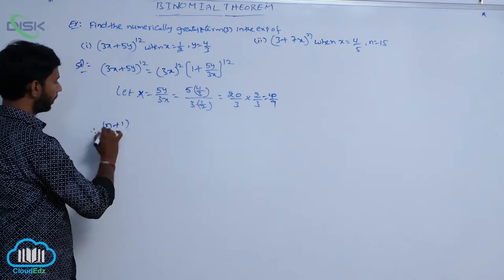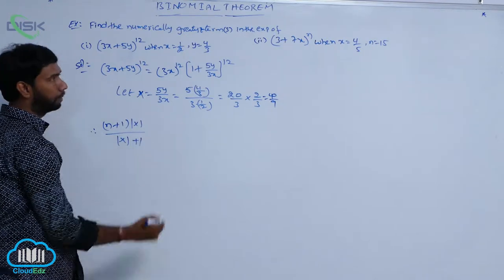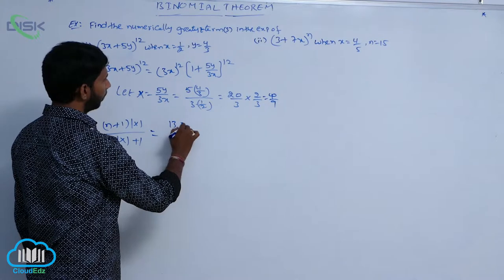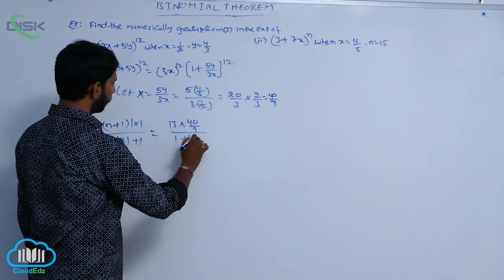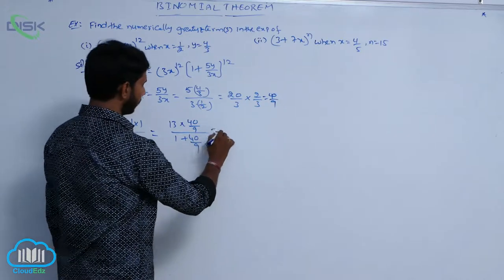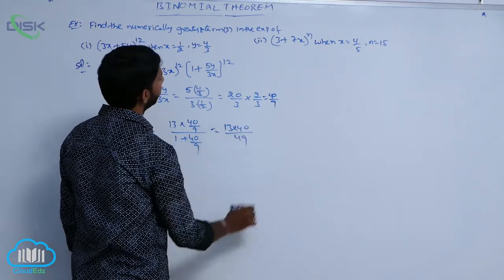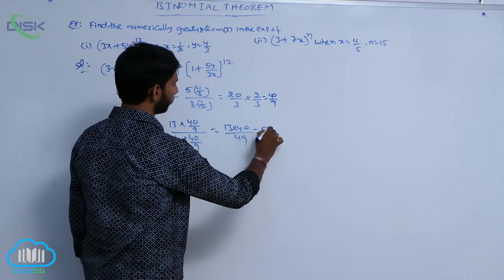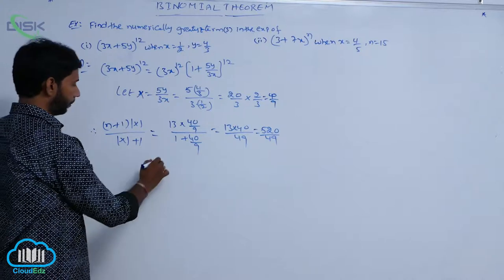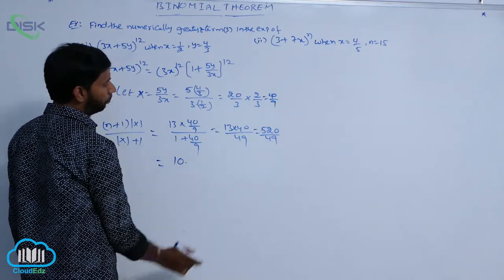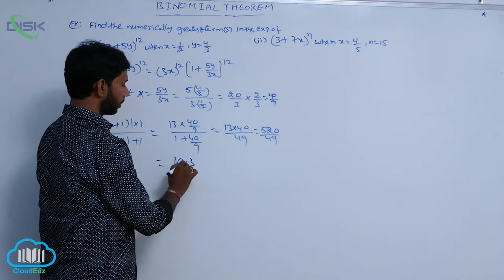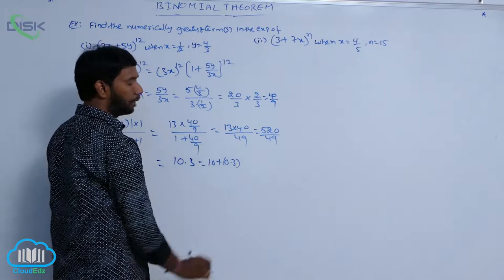Therefore, apply the formula (n+1)|X| / (|X|+1). Here n = 12, so n+1 = 13. This gives 13 × (40/9) / (1 + 40/9) = 13 × 40/9 ÷ (49/9) = 13 × 40/49 = 520/49. Dividing, 520/49 is approximately 10.3, which can be written as 10 + 0.3.